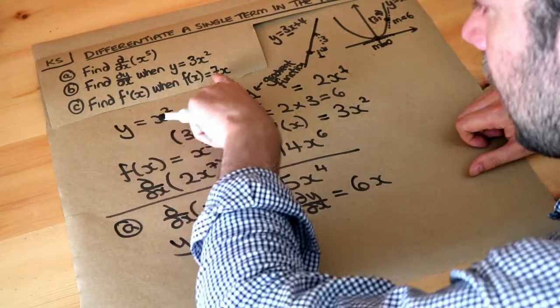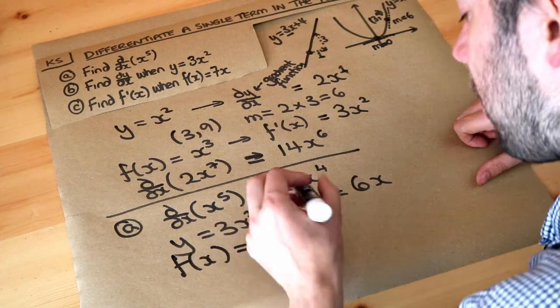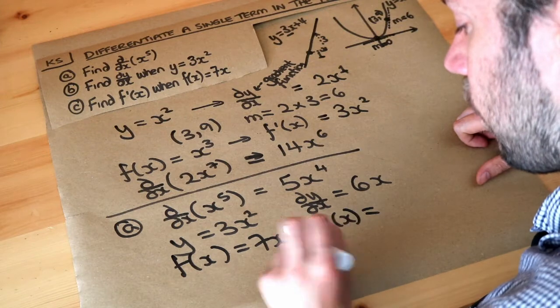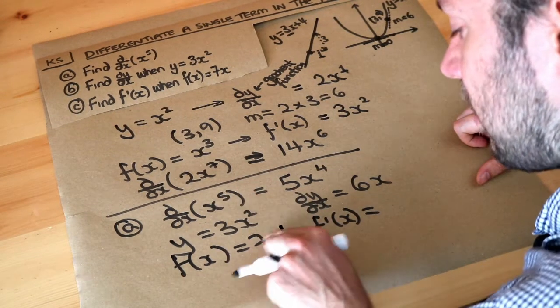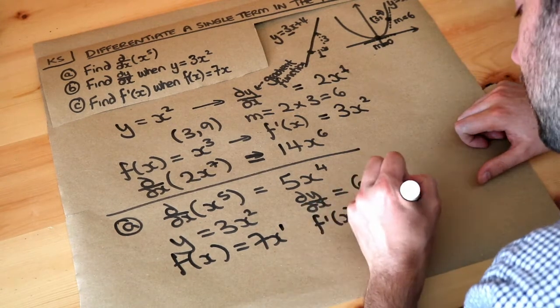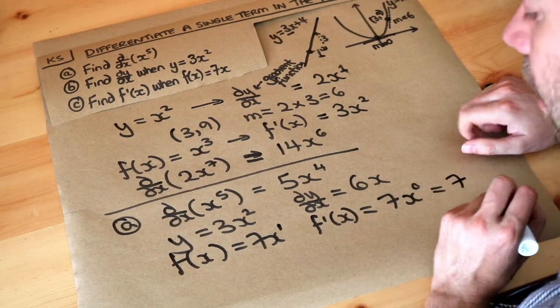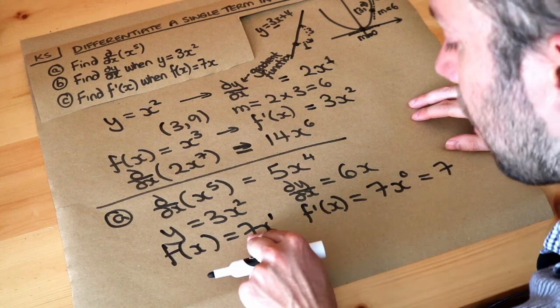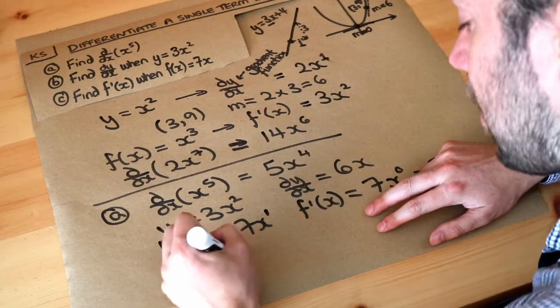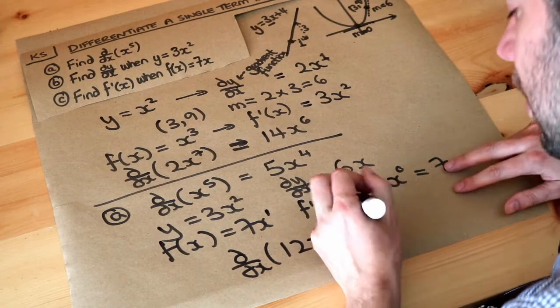And then finally, if f of X is equal to 7X, let's use the right notation, it would be f prime of X. You can imagine that power is 1, so 7 times 1 is 7, and then that 1 reduces to 0, so X to the 0, but anything to the power of 0 is 1, so it would just be 7. So in general, if you differentiate a number or constant times X, you just drop the X. So if I differentiated 12X, you just drop the X, and you would get 12.